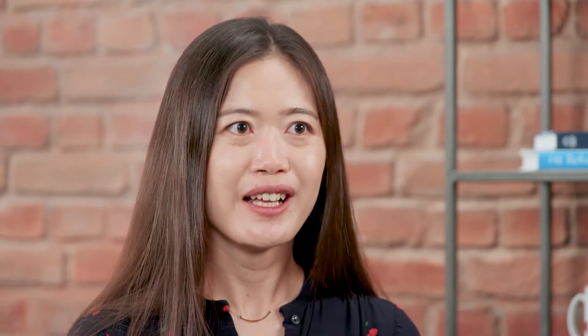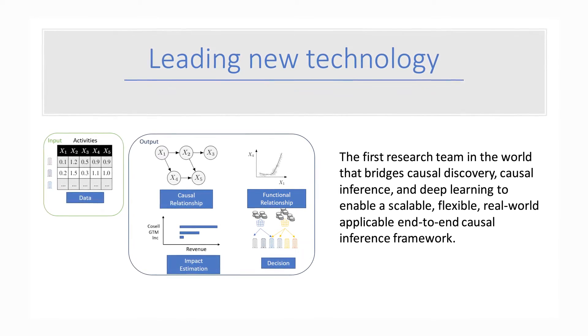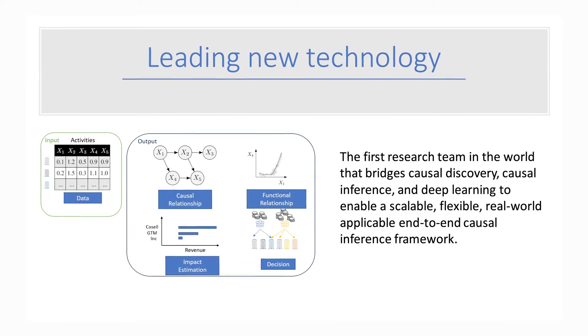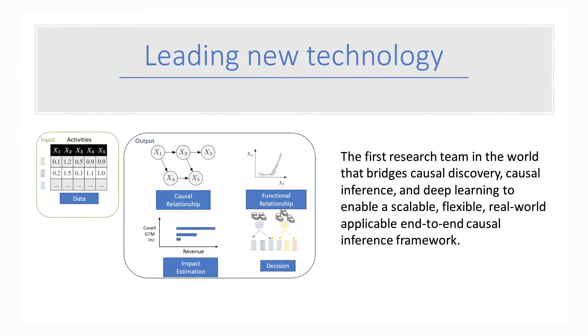How much is the revenue growth if you give a discount or if you give a membership? This we commonly call causal inference. Both parts are needed. Our team is actually the first team in the world to bridge causal discovery, causal inference, and deep learning into a single framework, so that we allow users to provide historic data and we can answer all these questions — tell them the relationship between variables, tell them the consequences of different actions, and be able to recommend and optimize decisions.